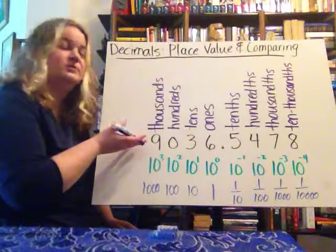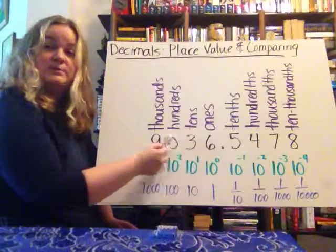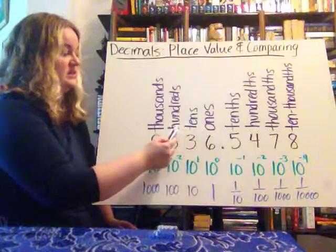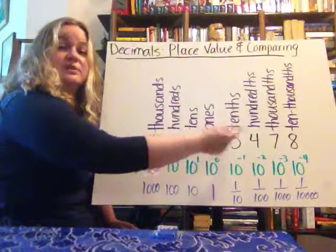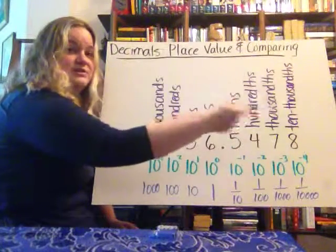We're going to start with a brief review of place value. You're pretty comfortable with the stuff above the decimal point: the ones, the tens, the hundreds, the thousands. And the stuff below the decimal point remember goes tenths, hundredths, thousands, ten thousandths, hundred thousandths, and so on.